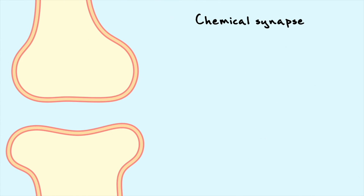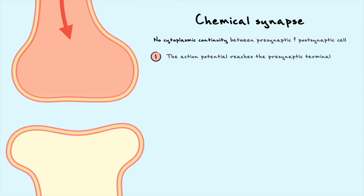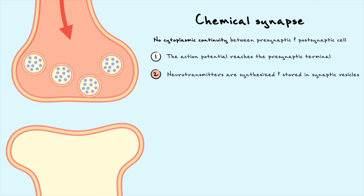When it comes to chemical synapses, there is no continuity in cytoplasm between the two cells, and the synaptic cleft is about 5 to 10 times larger than in electrical synapses. Everything begins when the action potential reaches the axon terminal, where neurotransmitters are synthesized and packaged into synaptic vesicles. This region in the presynaptic cell where neurotransmitters reside and are ready to be released is usually referred to as the active zone.